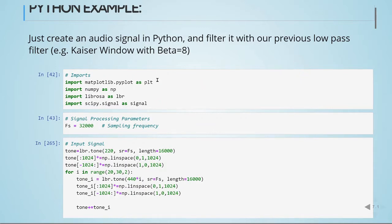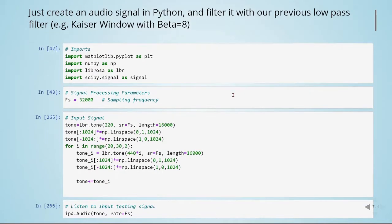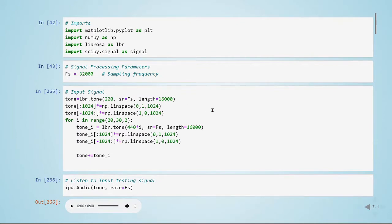I'm just importing some libraries. I'm going to use matplotlib, numpy, and scipy signal. I decided not to use Librosa this time because instead of using music I'm creating a signal with some tones. We have this fundamental frequency of 220 Hertz.